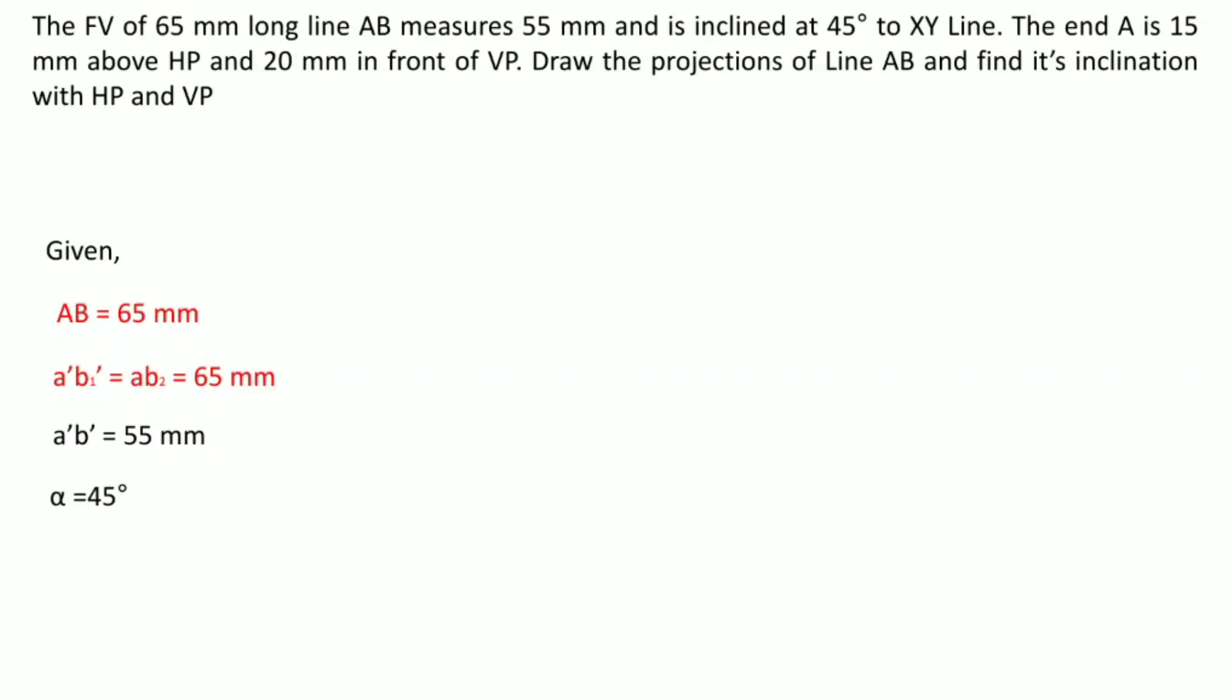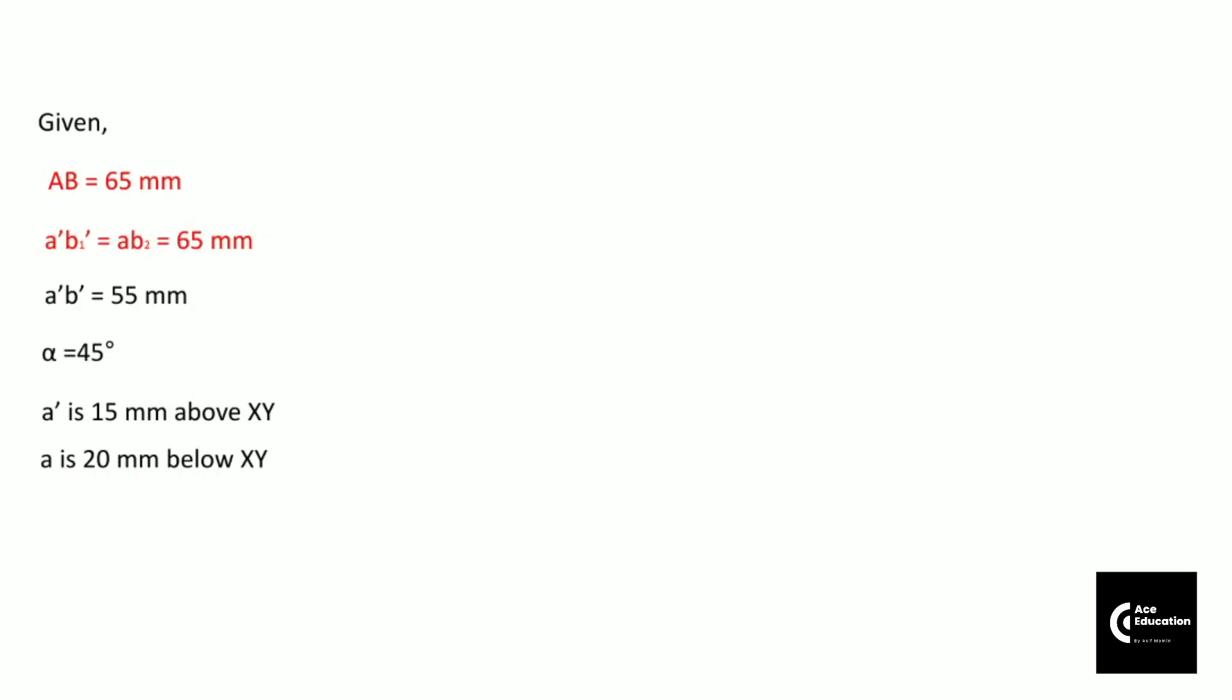Apart from that, the position of A' and point A is given - that is A' 15 mm above and point A 20 mm below XY line. We will start with the XY line first, and then we will project point A', which is 15 mm above, and point A, which is 20 mm below, on the same projector line.